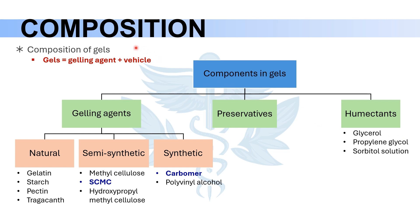The basic composition of any gel is a gelling agent which traps a liquid vehicle. There are three main types of gelling agents: natural, semi-synthetic, and synthetic. Under natural we have gelatin, starch, pectin, and tragacanth. Under semi-synthetic, the most important is sodium carboxymethyl cellulose (CMC). Under synthetic we have carbomer. CMC and carbomer are very popular gelling agents.